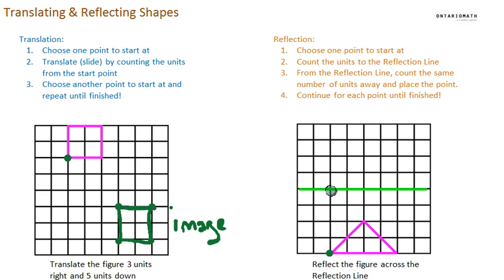Now from the reflection line, count the same number of units away and place the point. So I counted one, two, three, four. Now I have to count again, four. One, two, three, four. And I'm going to place it there.